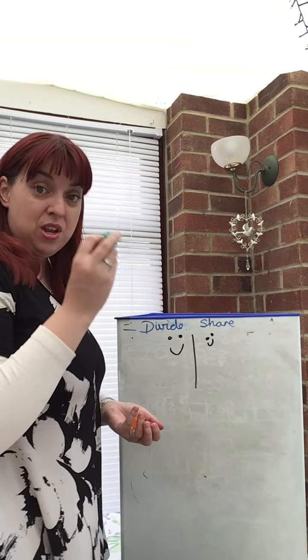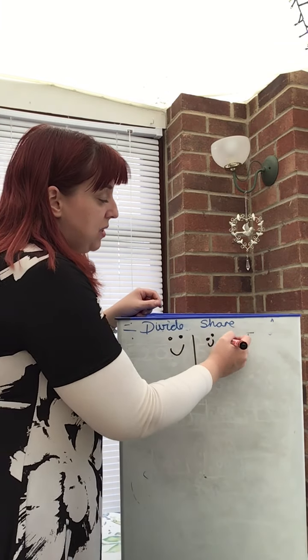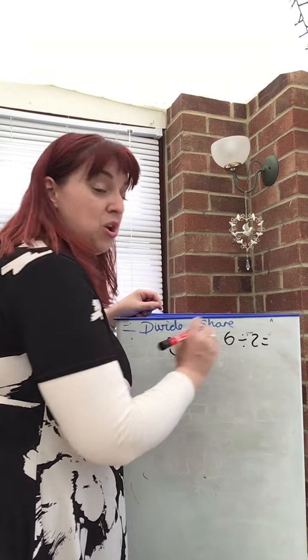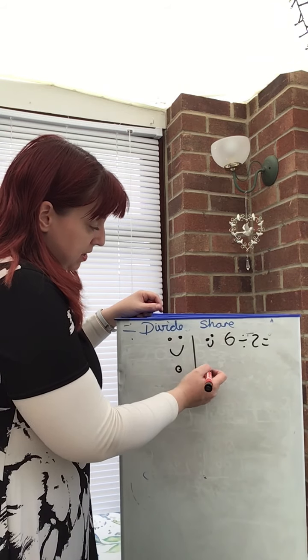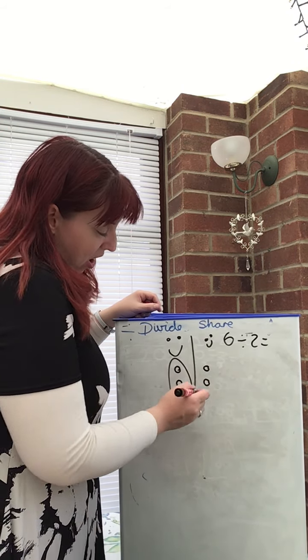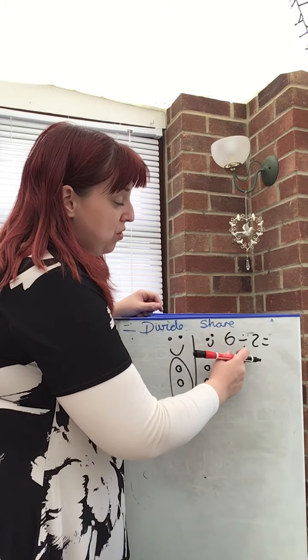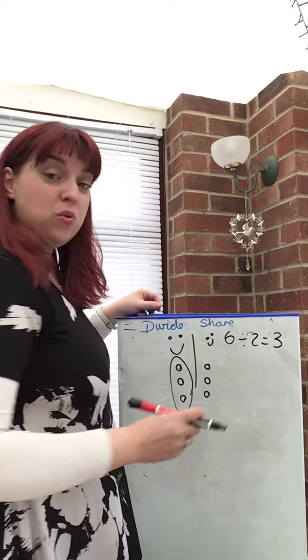When they're more confident using actual objects, again, you could draw it. So for example, if I now want to do six shared between two people, one, two, three, four, five, six, I have three, they have three, six shared or divided by two equals three.